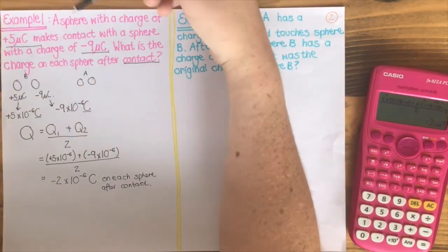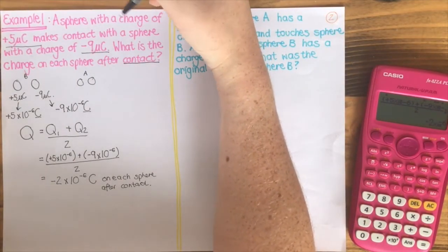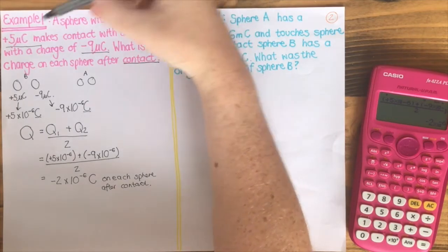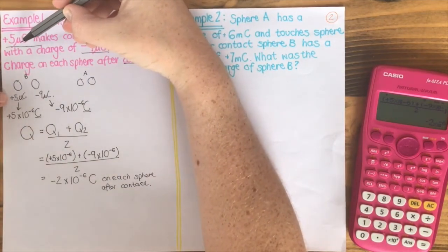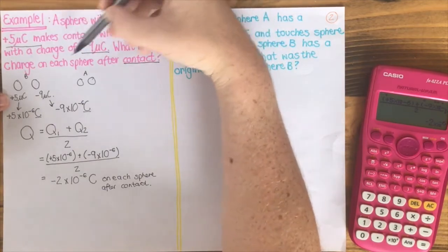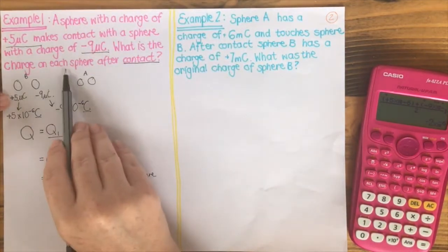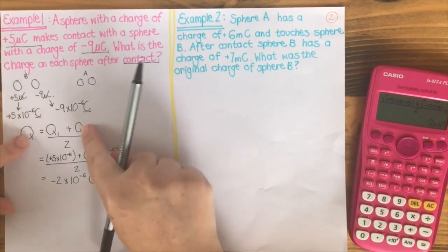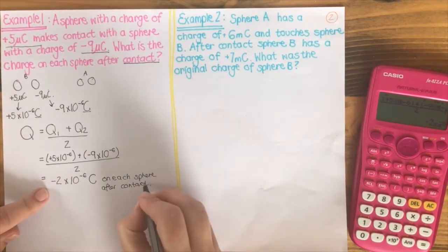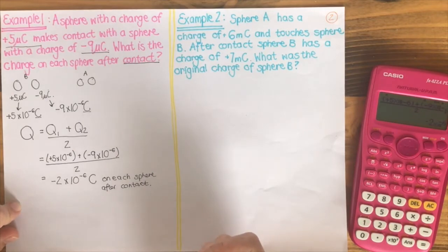Let's go back and read our question to see if we have answered everything that has been asked of us. A sphere with a charge of positive 5 microcoulombs makes contact with a sphere of charge minus 9 microcoulombs. What is the charge on each sphere after contact? We have found the charge on each sphere after contact, so we have our final answer.